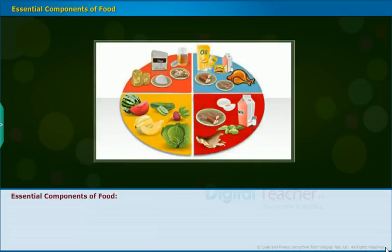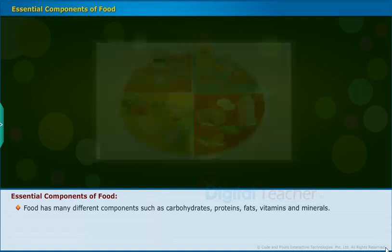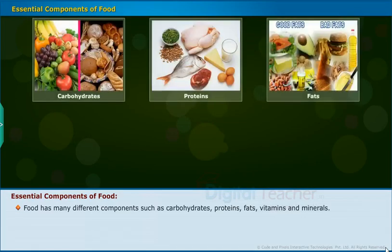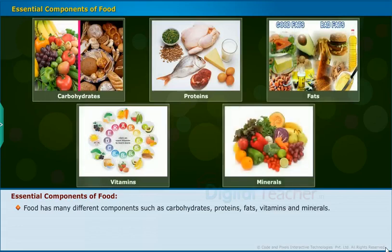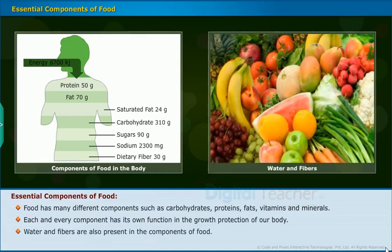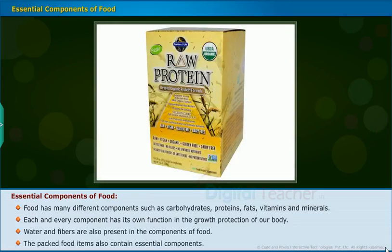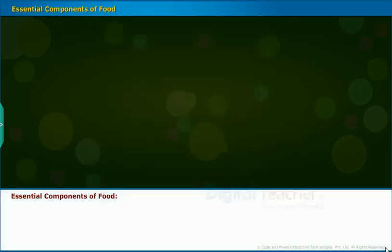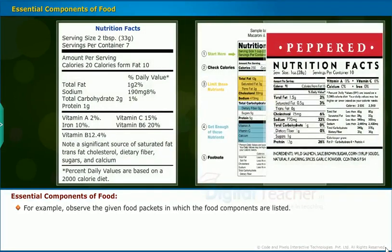Let us learn about the essential components of food. Food has many different components such as carbohydrates, proteins, fats, vitamins and minerals. Each and every component has its own function in the growth and protection of our body. Water and fibers are also present in the components of our body. The packed food items also contain essential components — for example, observe the given food packets in which the food components are listed. In order to test the components present in food substances, let us perform a small activity.